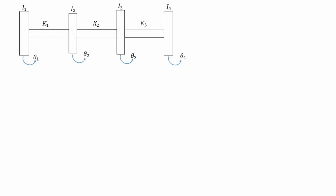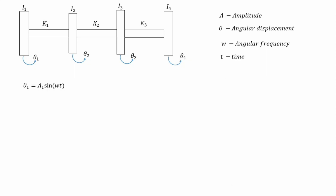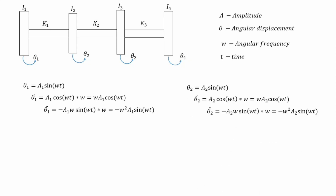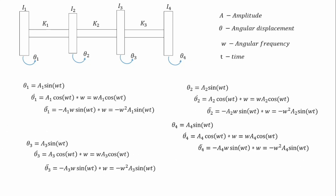Next we want to get an assumed displacement for each of the generalized coordinates. For theta one, we assume the motion is harmonic, therefore equal to a1 sin(ωt), where a is the amplitude, theta is the angular displacement, and ω is the natural frequency. Differentiating gives theta one dot, and differentiating again gives the generalized acceleration theta one double dot. We do the same for theta two, theta three, and theta four.